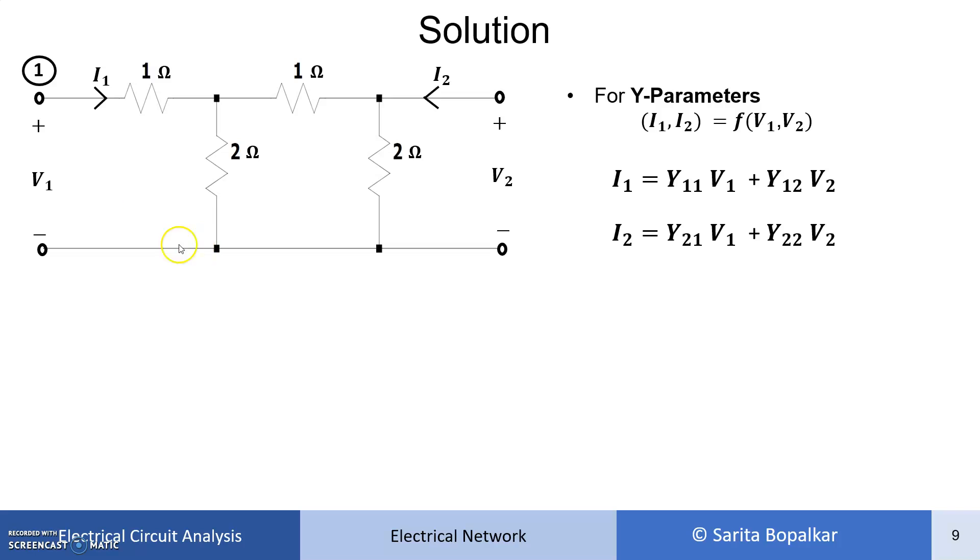Here voltage V1, so we will mark this point as node 1. Here voltage V2, so we will mark it as node 2. We will mark it as 1, 2, 3, but to avoid confusion, since this voltage is V1, we mark it as 1.